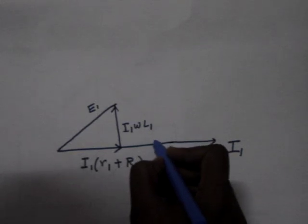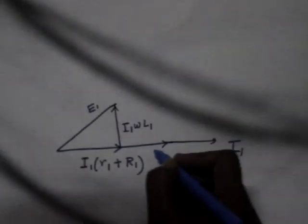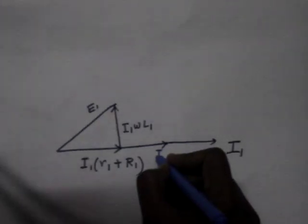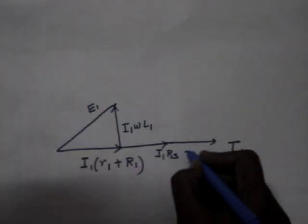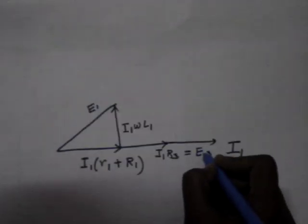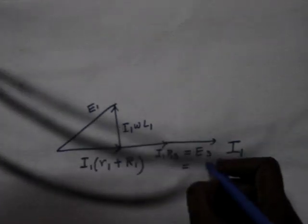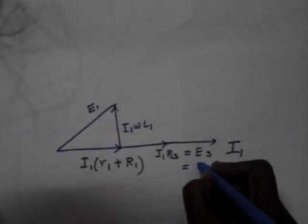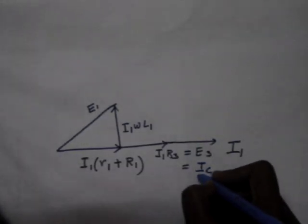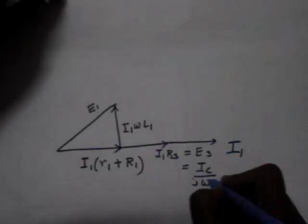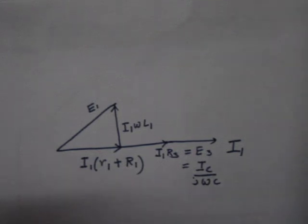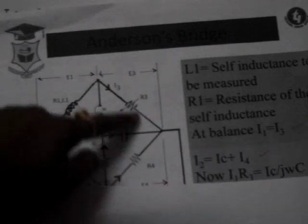Now in E3 we have I1 R3 is equal to E3, which is equal to Ic by j omega C. This one is this drop.